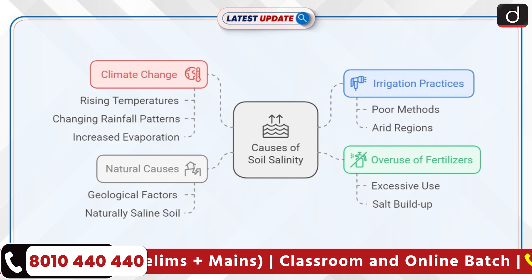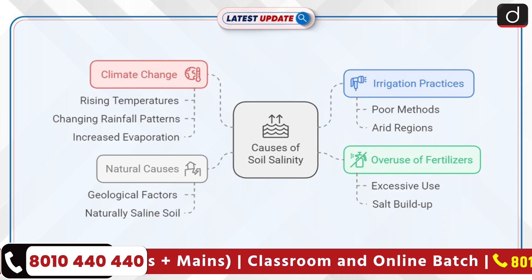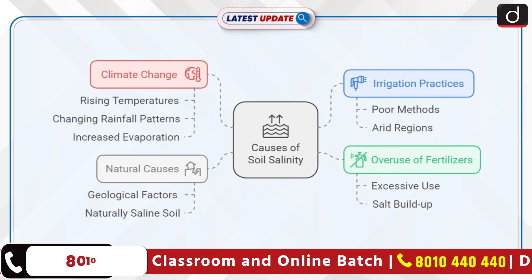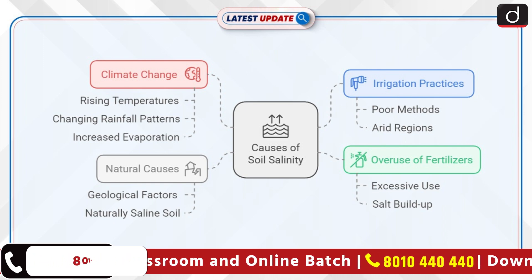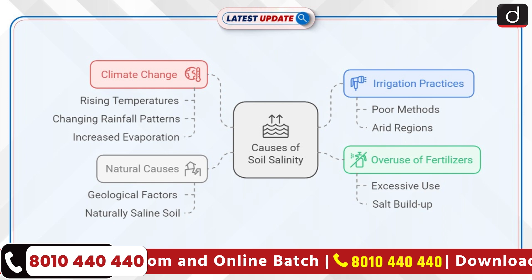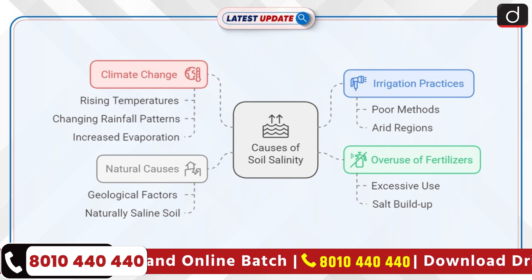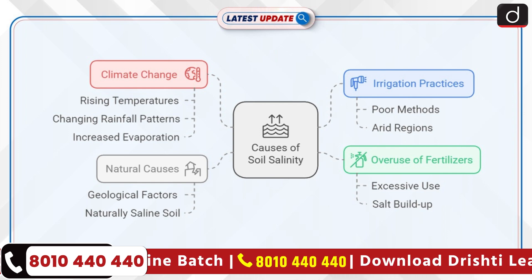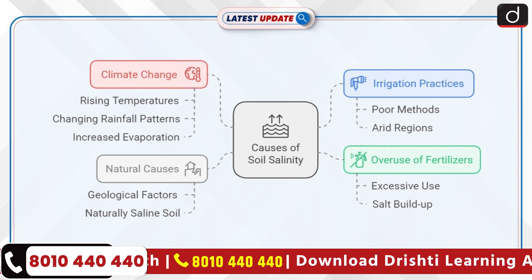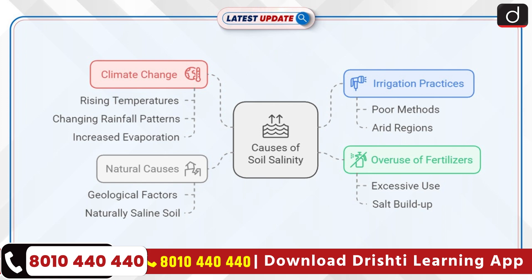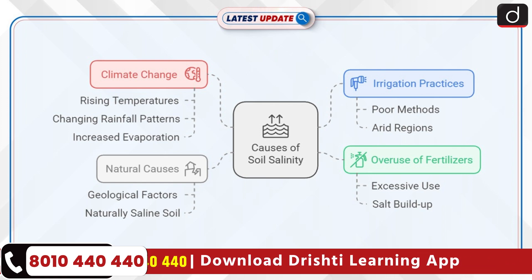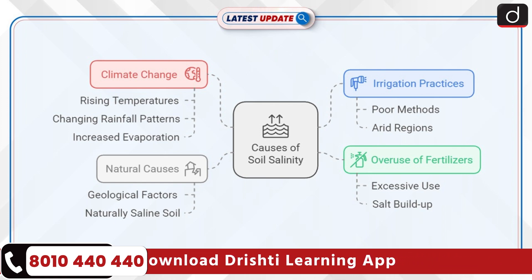Overuse of fertilizers: excessive use of chemical fertilizers can contribute to salt buildup, making soil more saline. Natural causes: in some areas, geological factors lead to naturally saline soil, exacerbating the issue when combined with human activity.